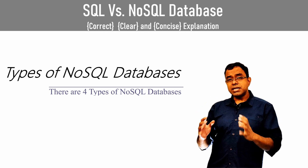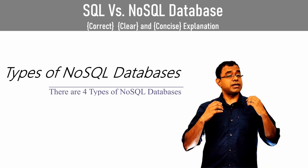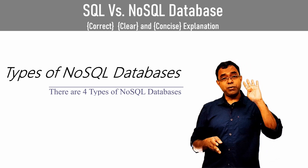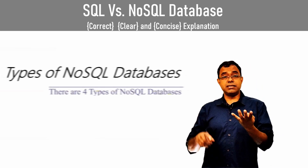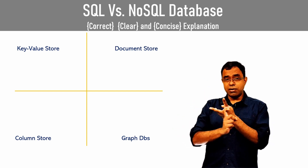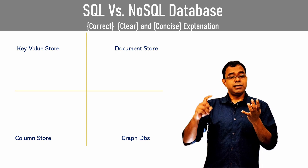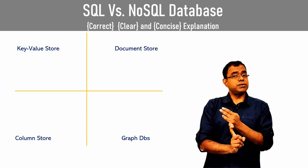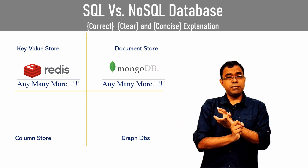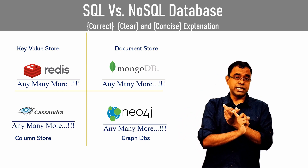Now let's go further into NoSQL databases and understand what types are available. There are four types of NoSQL databases: key-value store, document store, column store, and graph databases. Examples: key-value store — Redis; document store — MongoDB; column store — Apache Cassandra; graph database — Neo4j.